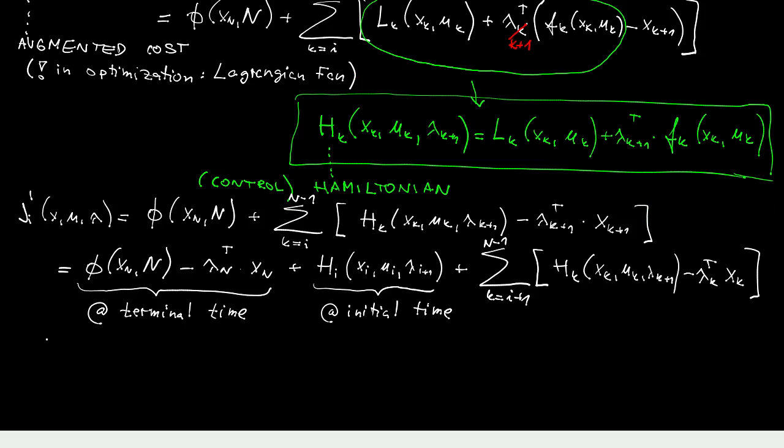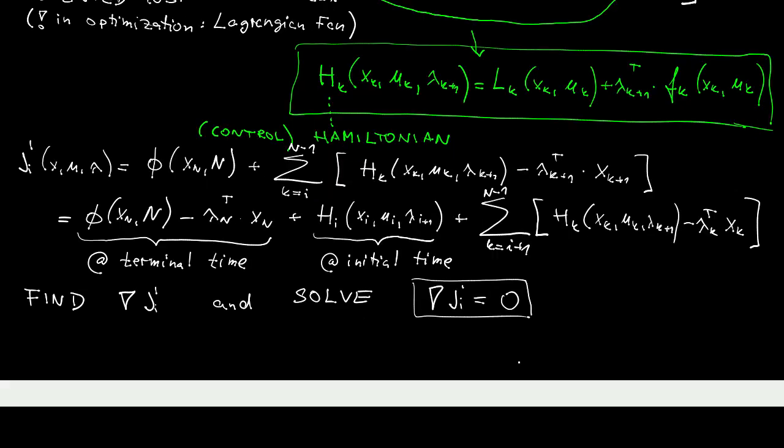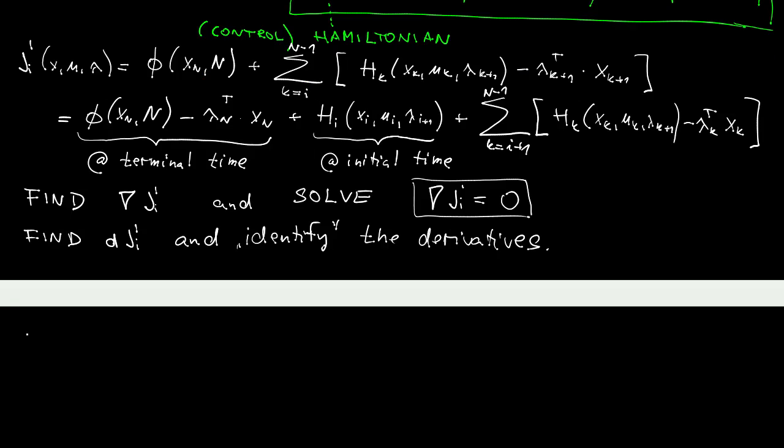Now that we have this augmented cost function, we know what needs to be done, right? We now need to find the gradient of this augmented cost function and set it equal to 0 and solve for all the variables. And this way we will obtain the critical point, the candidate for the optimal solution. And a good advice here is, rather than aiming directly for gradients, is to solve or to find the differential. And then, once we have it, we will be able to identify the derivatives, hence the gradient.